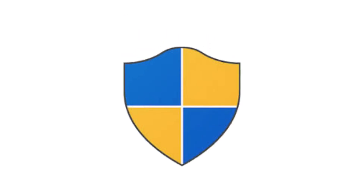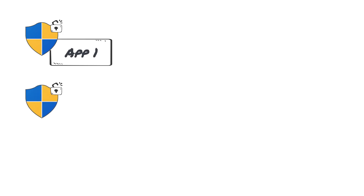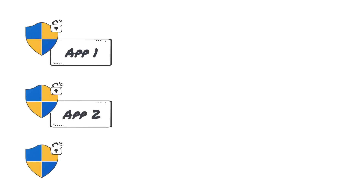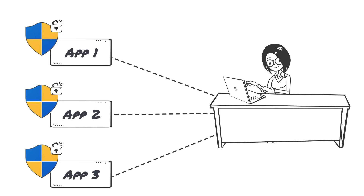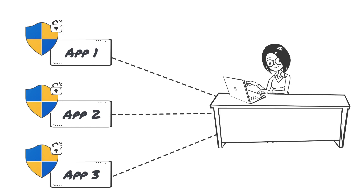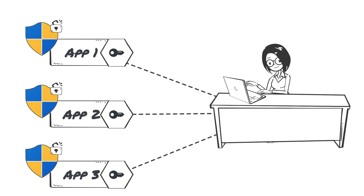What happens if UAC is incorrectly configured or disabled? In that case, Windows continues to display the UAC shield icon for items that require elevation. However, these elevation commands will have no effect, and every application or process an administrator starts will be running with an admin token.